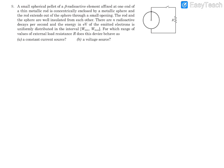N radioactive decays per second occur because of this element at the center. The electrons emitted in this beta radioactivity have uniformly distributed energy in the interval W_minimum to W_maximum, given in electron volts. The sphere and rod are insulated from each other at their junction. We need to find the range of external load resistance R so that this device works as a constant current source and then as a voltage source.